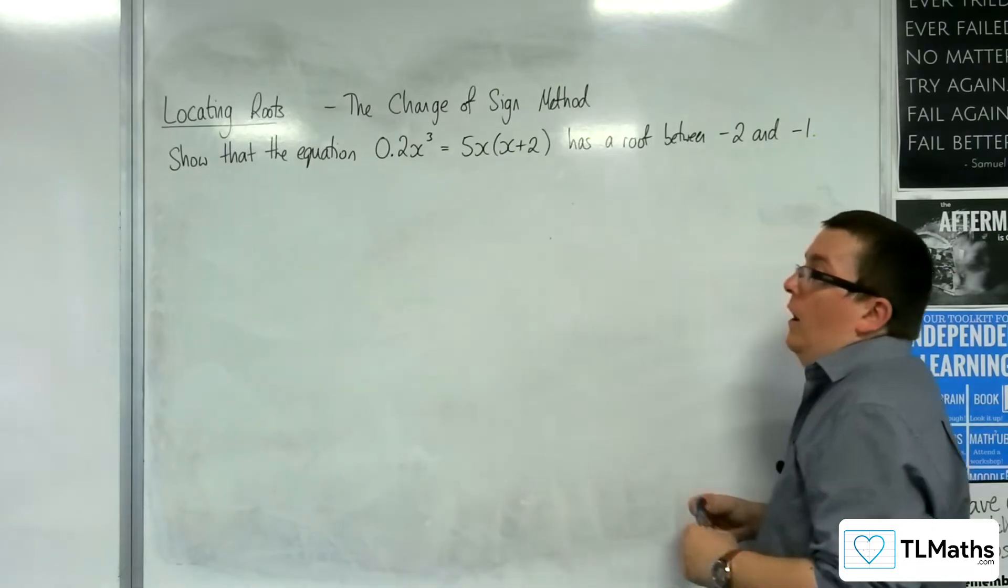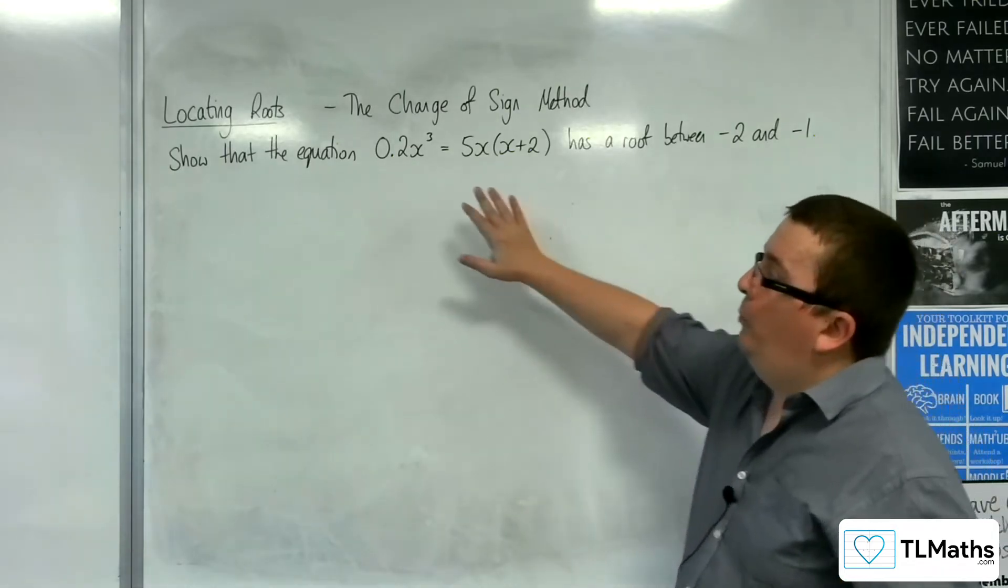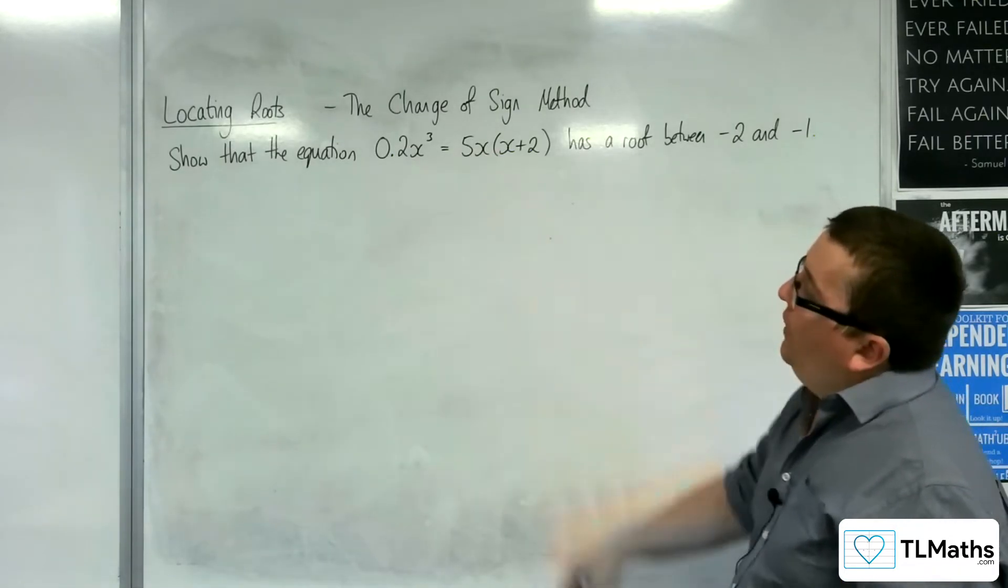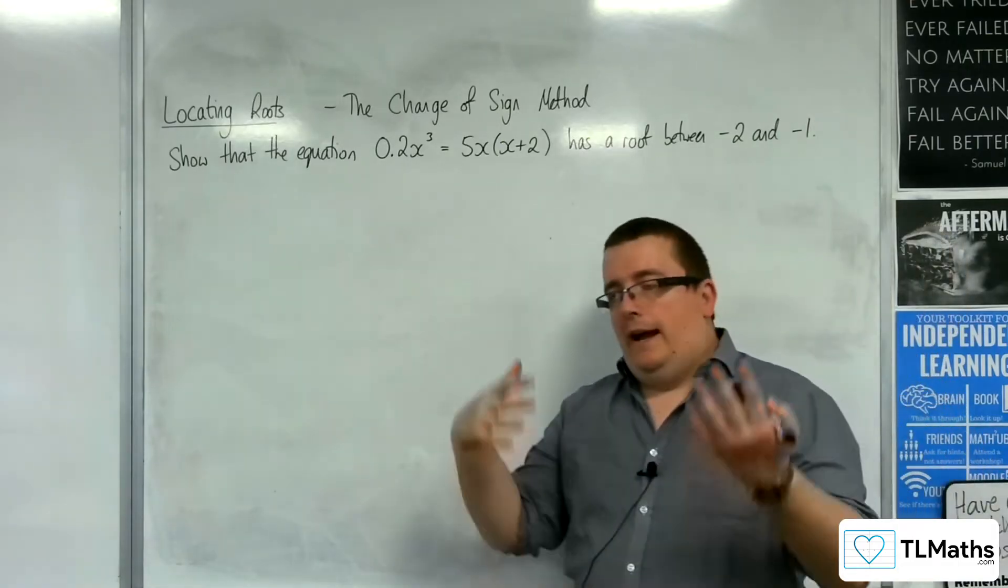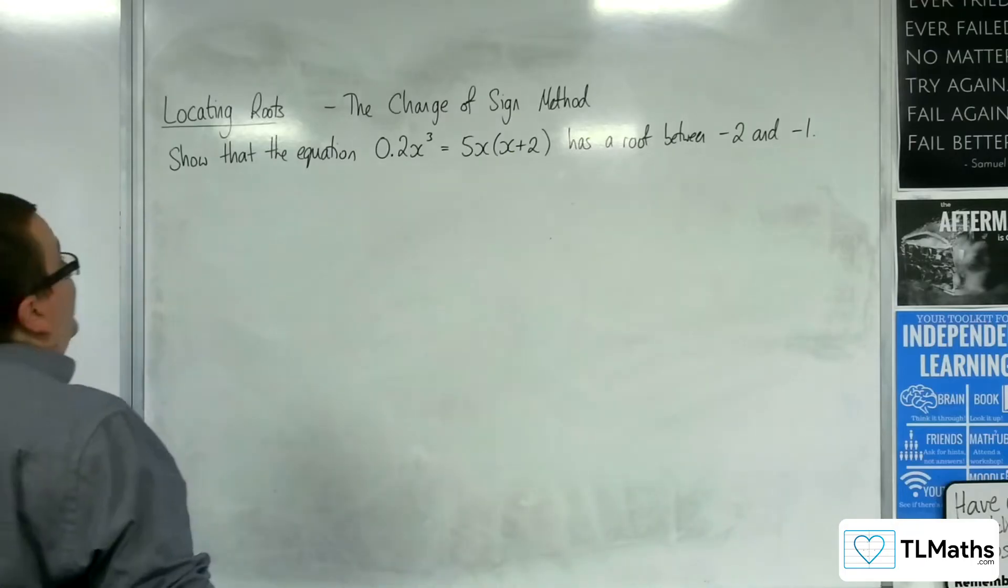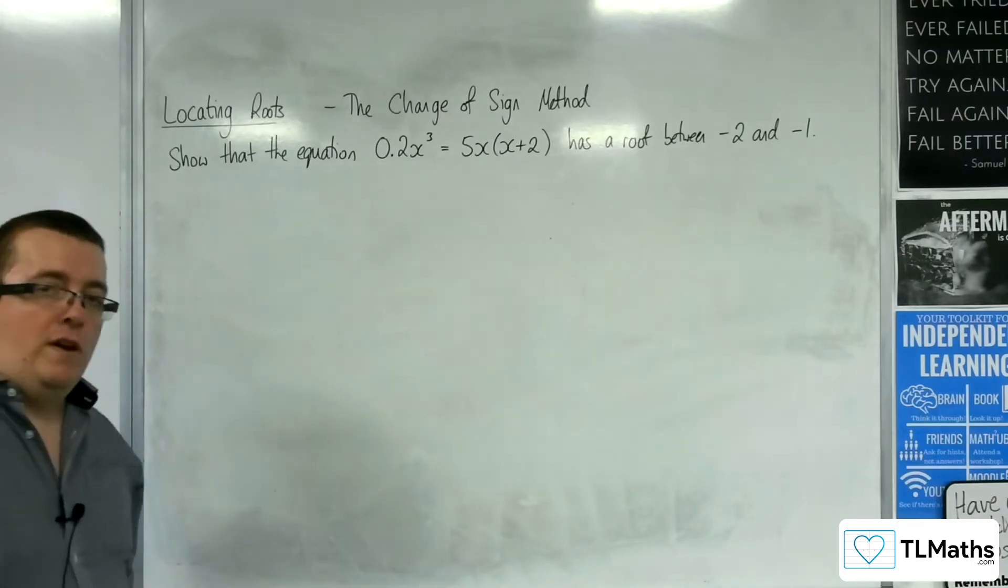So let's say I wanted to show that the equation 0.2x³ = 5x(x+2) has a root between -2 and -1. How would I actually go about answering this question should it come up in an exam? What would I need to write down?